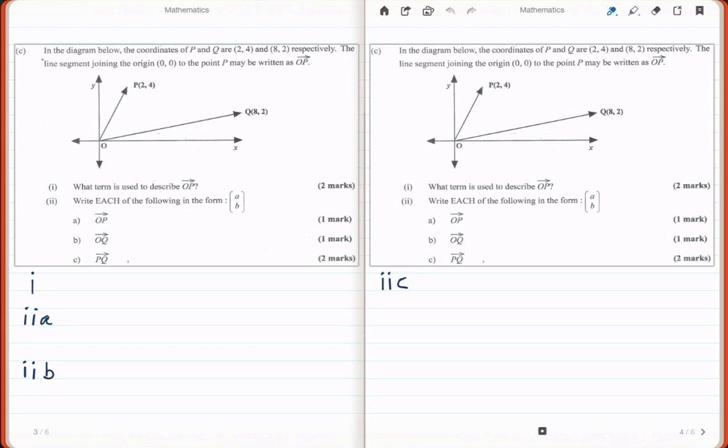In the diagram below, the coordinates of P and Q are 2, 4 and 8, 2 respectively. The line segment joining the origin 0, 0 to the point P may be written as OP with an arrow on top.